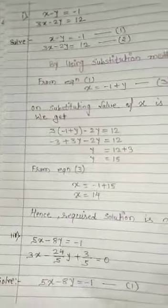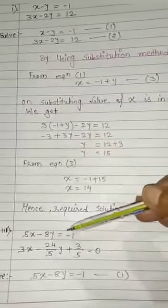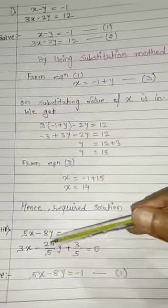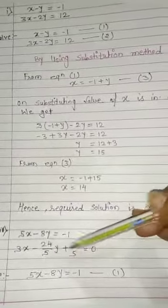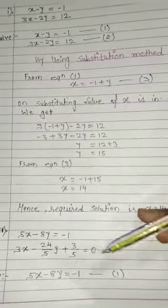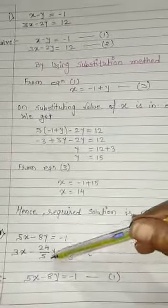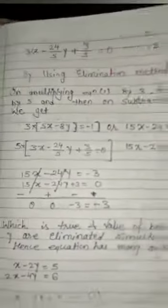Next, question number 2. 5x minus 8y is equal to minus 1. 3x minus 24 by 5 y plus 3 by 5 equal to 0. Note down the question again. Equation 1 and equation 2.